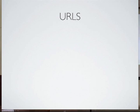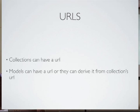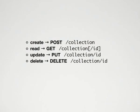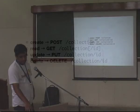Collections have a URL. The models derive the URL from the collection, or you can define it individually. They map really well — create maps to POST, read to GET, update to PUT, delete to DELETE. It maps really well with the RESTful thing.